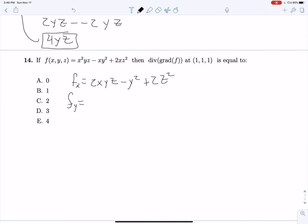Fy is going to be x squared z minus 2xy and fz is going to be x squared y plus 4xz. Okay, and now, taking our divergence, the partial derivative with respect to x is going to be 2yz, and that's it. And then the partial derivative with respect to y over here is going to be minus 2x. And the partial derivative over here is going to be 4x.